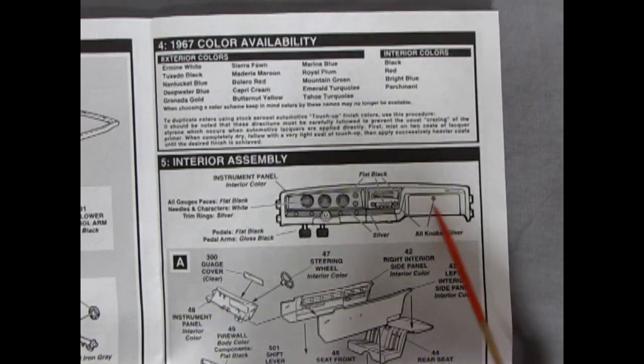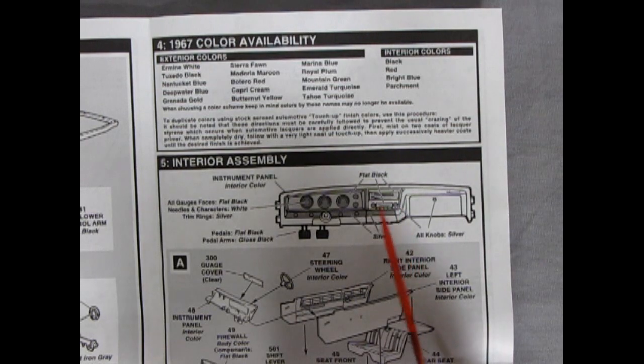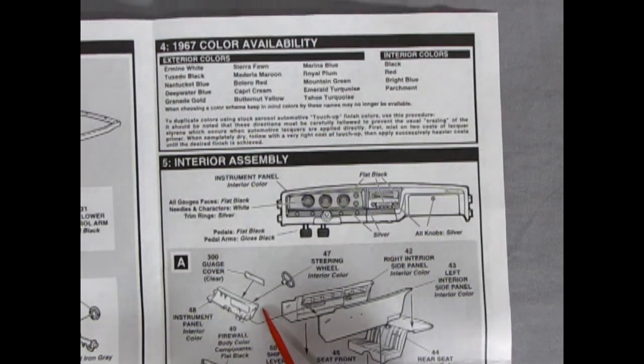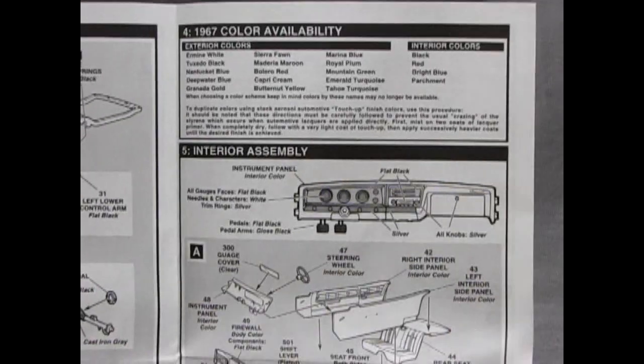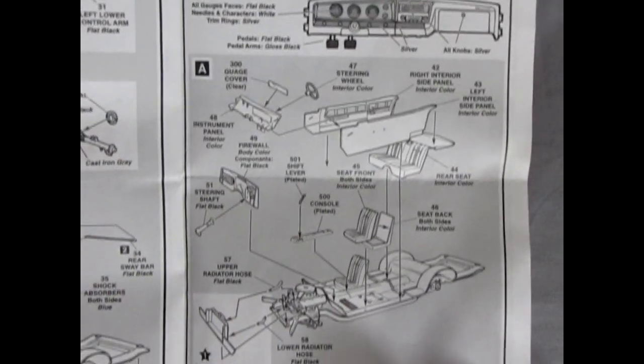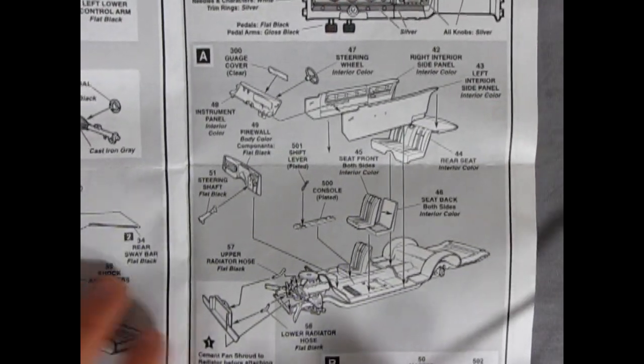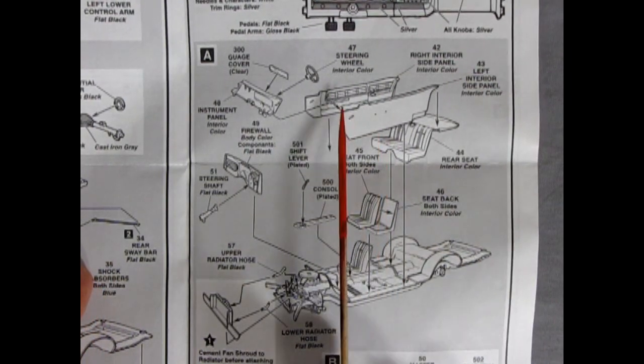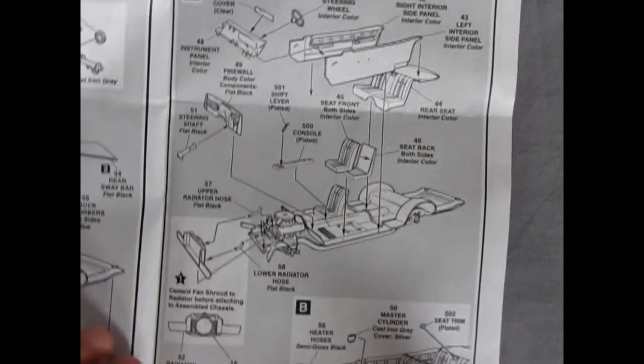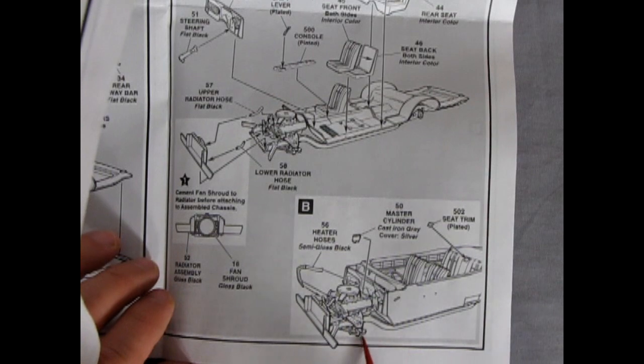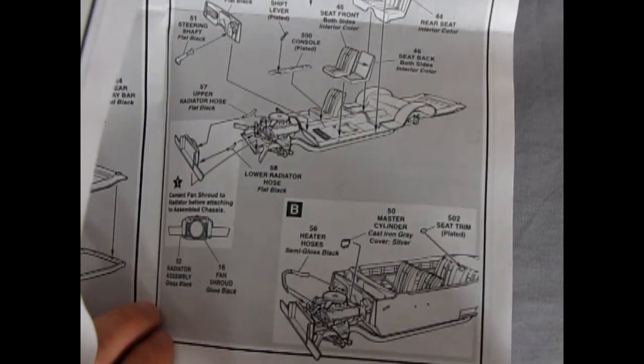There's our instrument panel, the dashboard showing you how to paint it all. There's a clear plastic gauge cover going on in here. Let's just bring this up into the camera. You get your right and left interior door panels, your seats, your console, all this great stuff. And then the interior going together there.